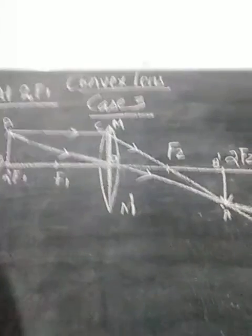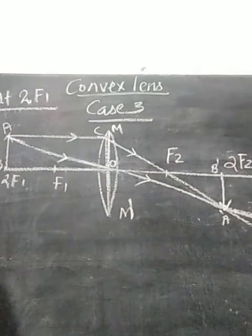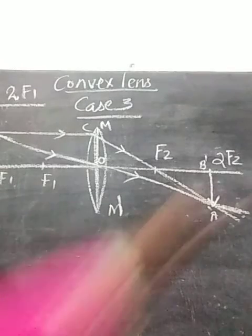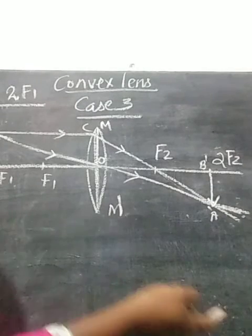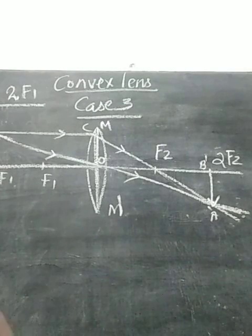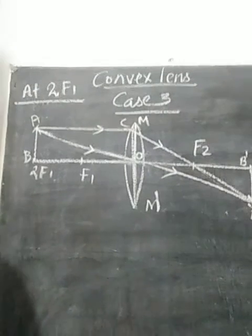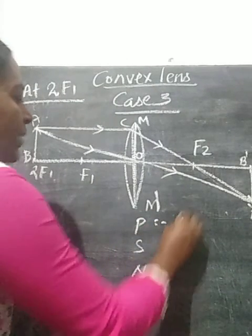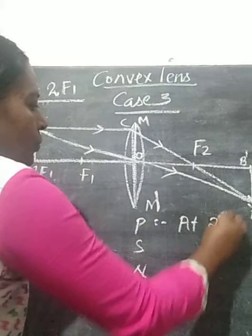Object is placed at 2F1 on the left side. We got the image at 2F2 on the other side. What is the position, size, and nature of the image formed? Position is at 2F2.